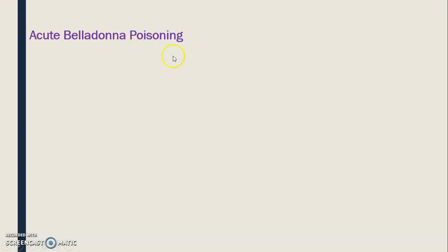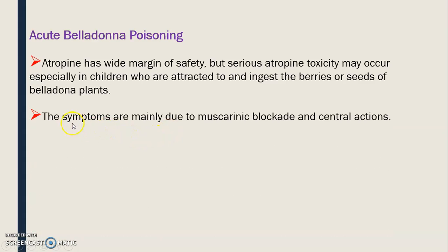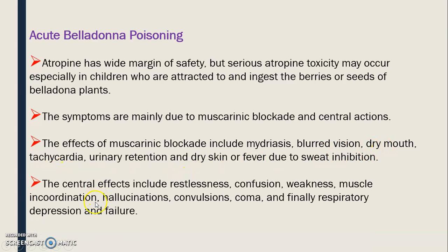Regarding acute belladona poisoning, atropine has a wide margin of safety, but serious atropine toxicity may occur, especially in children who accidentally ingest the berries or seeds of the belladona plant. The symptoms are mainly due to muscarinic blockade and central action. The effects of muscarinic blockade include mydriasis, blurred vision, dry mouth, tachycardia, urinary retention, and dry skin or fever due to sweat inhibition.